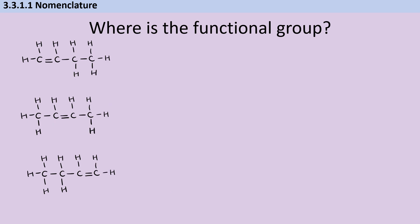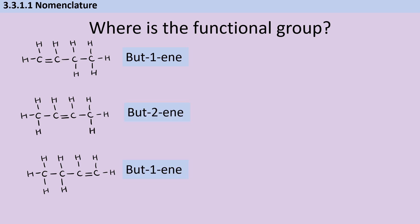A similar situation here: we've got a four-carbon chain, that means but; we've got a double carbon-carbon bond, so that means -ene. The first alkene has the bond starting at carbon number one, so this is but-1-ene, and below it is but-2-ene. But this third one is going to be but-1-ene again, because we're just looking for the smallest possible number — we go from the right rather than the left.